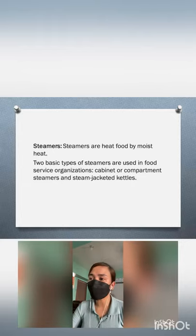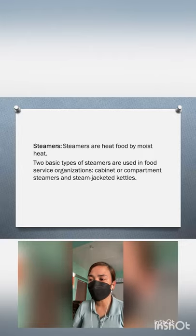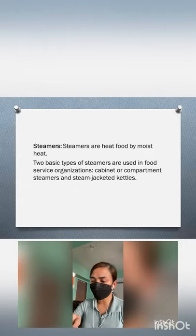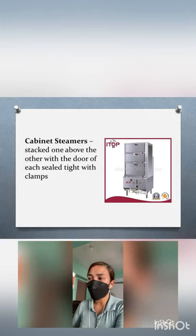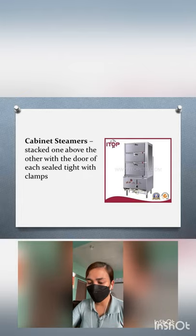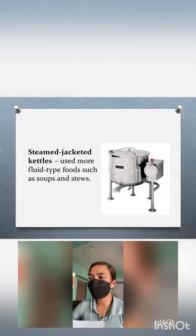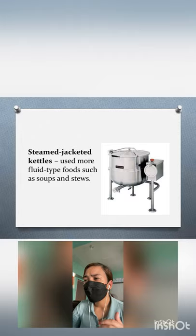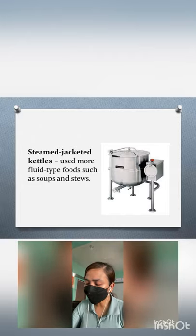Next, we have steamers. Steamers are used to heat food by moist heat. There are two basic types used in food service: cabinet or compartment steamers, and steam jacketed kettles. Cabinet steamers are great for producing a large variety of foods including frozen or fresh vegetables and seafoods. Steam jacketed kettles are used more for fluid-type foods such as soups and stews, and offer faster cooking with sauces, pastas, puddings, stews, jellies, soups, rice, eggs, and even chocolates.